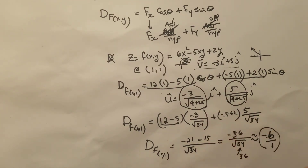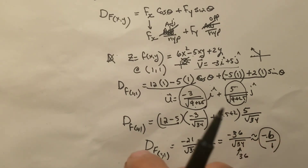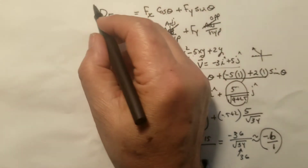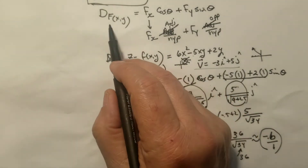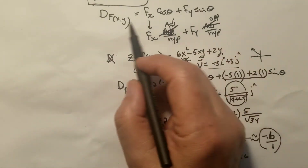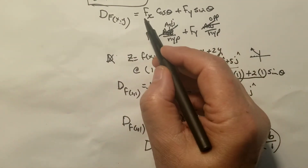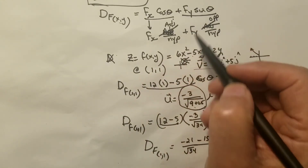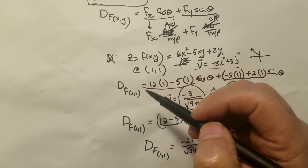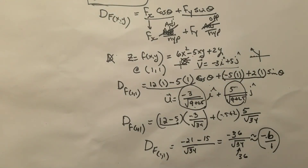This is an example of how to find the directional derivative. I will post this in Echo. After that, I'm going to continue section 15.5 and rewrite the directional derivative as a dot product of two vectors. Thank you.